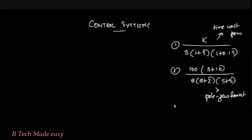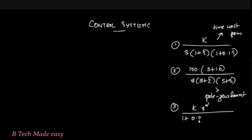The third problem is k into s² divided by 1 plus 0.2s into 1 plus 0.02s. This is the third problem.